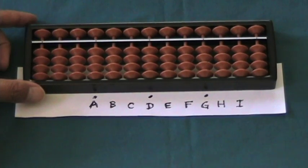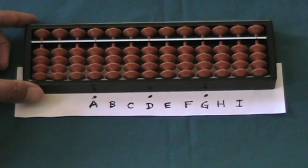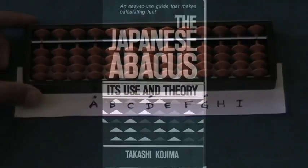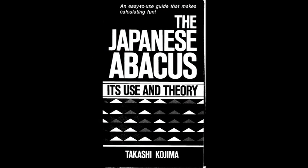Division with a one-digit divisor. We're going to do example two on page 66 of Kojima.